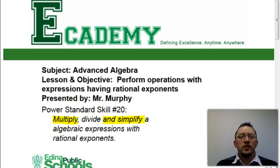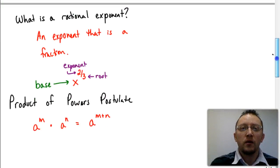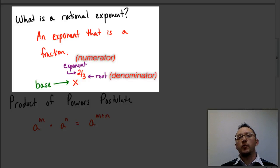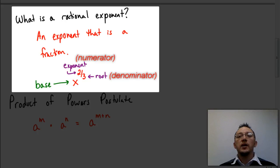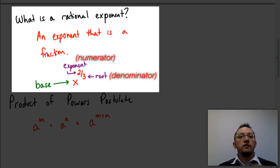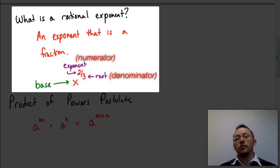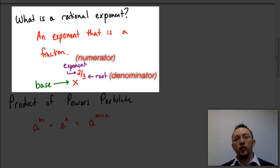Since this whole skill is all about dealing with rational exponents, it would probably be a good idea to understand what a rational exponent is. A rational exponent is where we have an exponent that is actually a fraction. That fraction has two parts: a numerator and a denominator. The item sitting on the ground we call our base, and the item up in the air we call our exponent. The numerator represents the power we're raising the number to, and the denominator represents the root. For example, if I have x raised to the two-thirds power, that represents taking the third root of x and then squaring it.